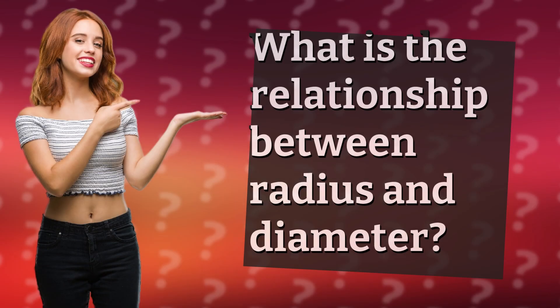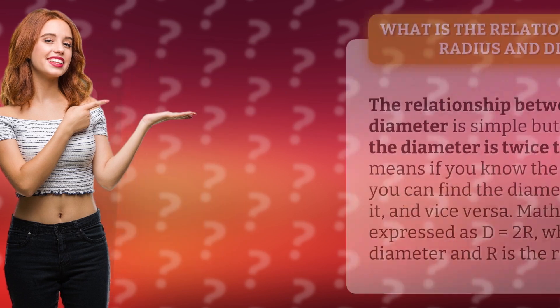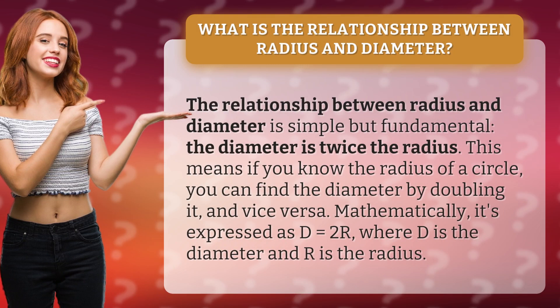What is the relationship between radius and diameter? The relationship between radius and diameter is simple but fundamental. The diameter is twice the radius. This means if you know the radius of a circle, you can find the diameter by doubling it, and vice versa.